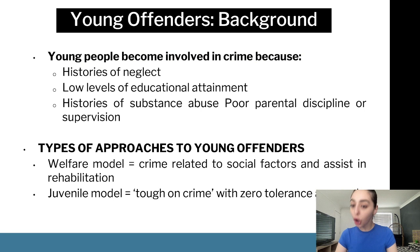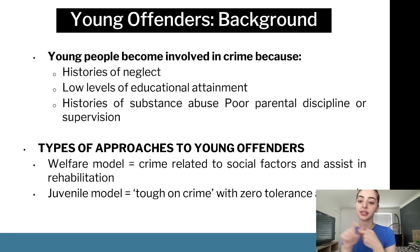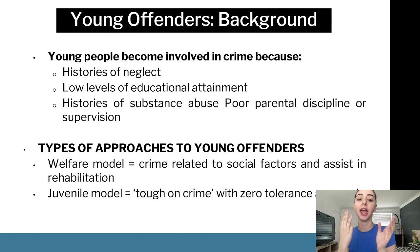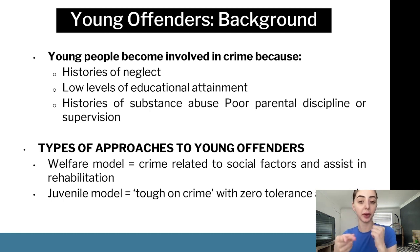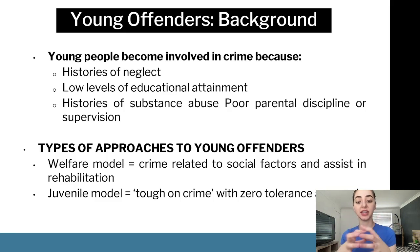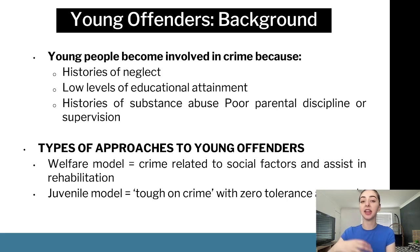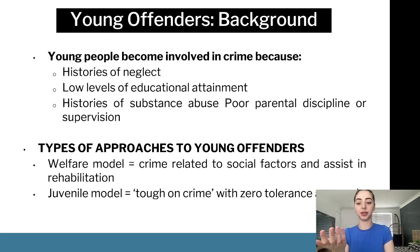Based on research, young people become involved in crime because they have histories of neglect, low levels of educational attainment, substance abuse, and poor parental discipline or supervision. There are two different approaches to young offenders. The welfare model seeks to rehabilitate them by addressing those social factors — childhood abuse, low education, unemployment — that lead a young offender to commit crime.